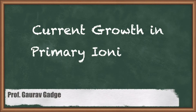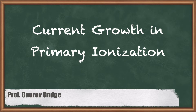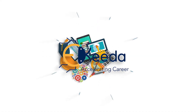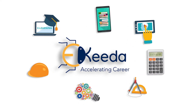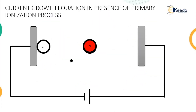Hello friends, now we are going to study the next topic related to high voltage engineering. The name of the topic is current growth equation in presence of primary ionization process. In the previous lecture we already studied what is meant by ionization process, which is classified into two: the first is called primary ionization and the second is called secondary ionization.